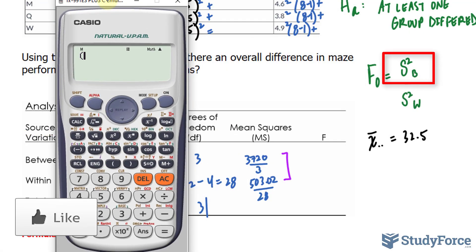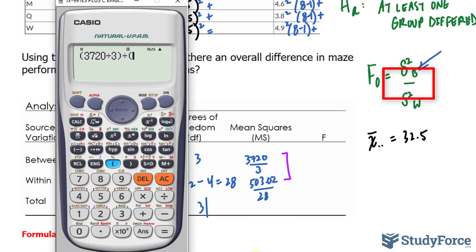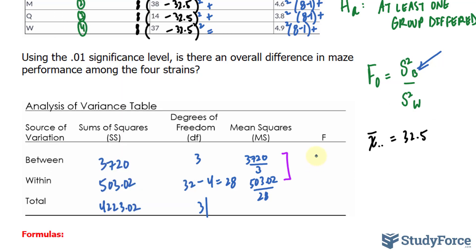For the top part here, we'll have 3720 divided by 3, so that takes care of this one. Then we'll divide that by 503.02 divided by 28, and we get our f observed to be 69.02, 69.02.